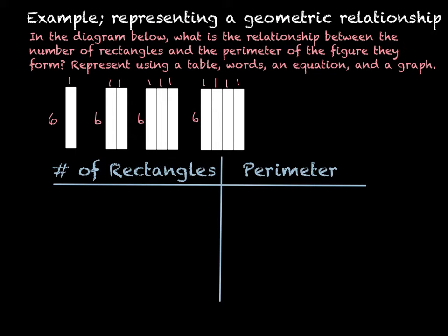In this example, we're going to be using the diagram to show the relationship between the rectangles and the perimeter. We're going to start by using a table, then write it in words, then write an equation, and then graph it.